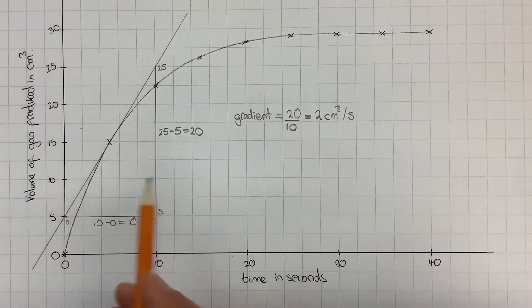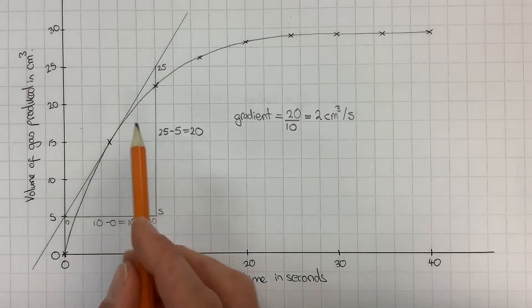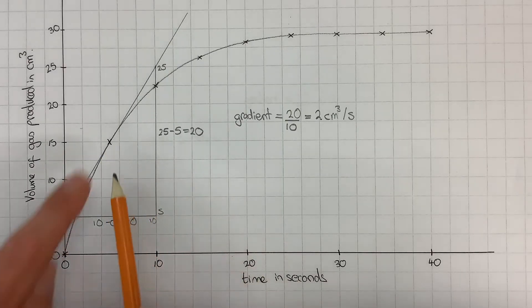That gives me the instantaneous gradient of the line, or the instantaneous rate of reaction at five seconds.